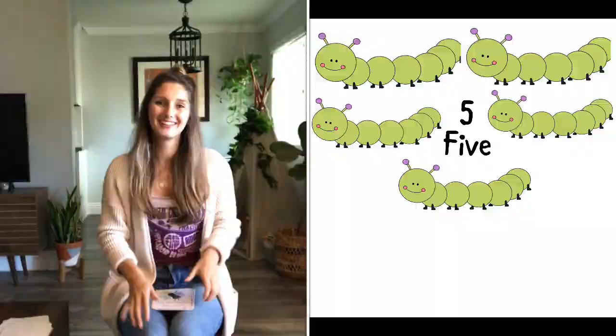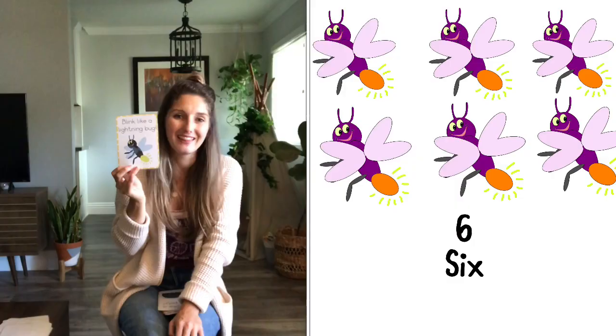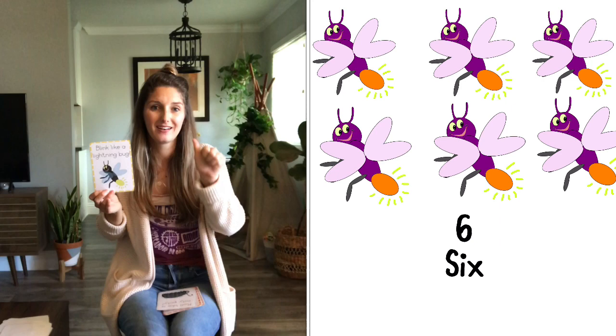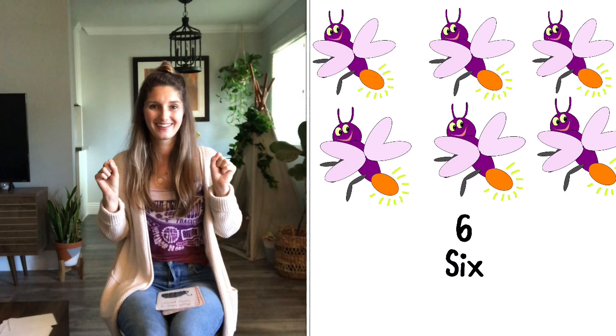Next we have a lightning bug. Do you see right here? It's lit up. It blinks at night, you can see it. Let's see how many lightning bugs are there. One, two, three, four, five, six. Six lightning bugs. So we're going to blink with our hands. Can you do that? Six times. One, two, three, four, five, six. Good job.